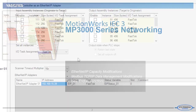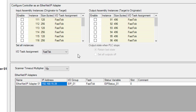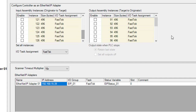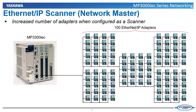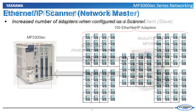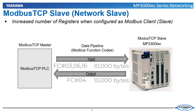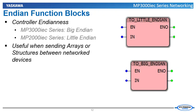Here's a quick preview. The MP3000 IEC series controllers have up to 16 Ethernet IP instances available for use as an adapter and can control up to 100 Ethernet IP adapters. 512 coils and inputs are available over Modbus TCP along with up to 10,000 bytes of holding register memory using the %M memory location.